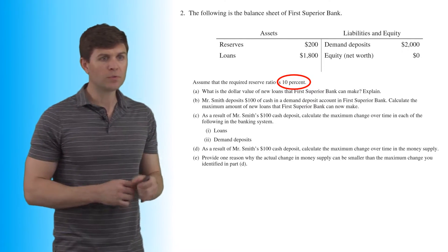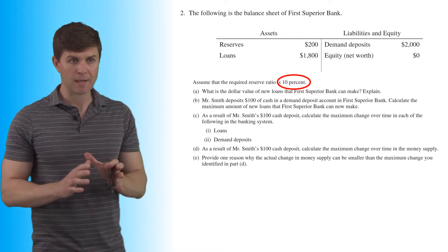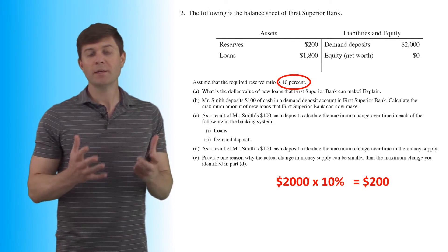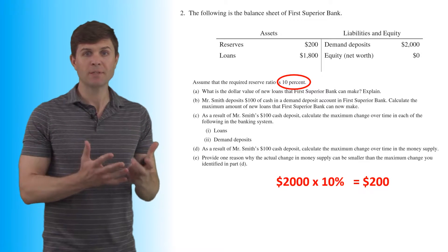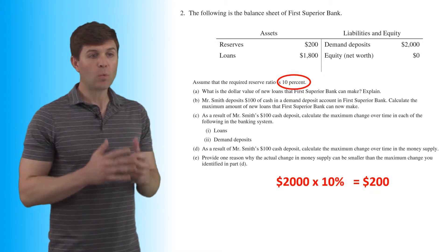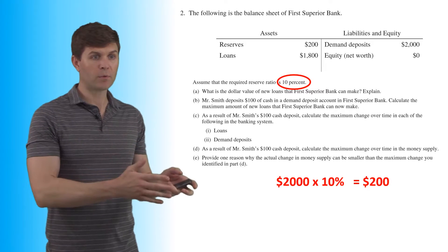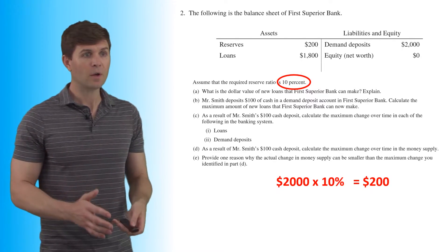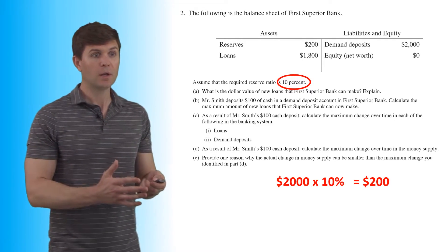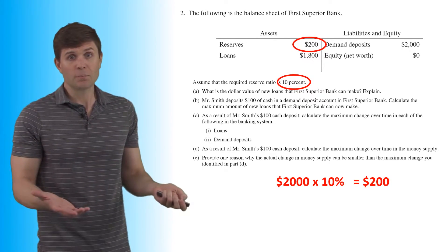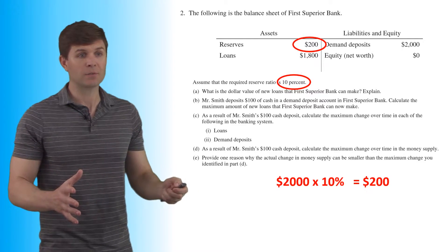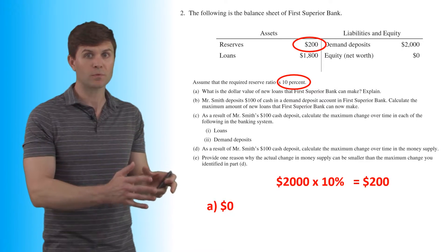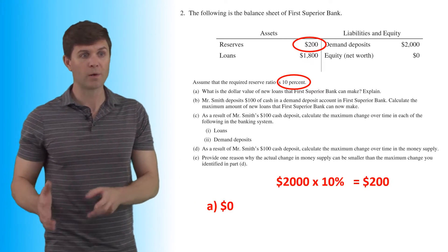Part A asks: what is the dollar value of new loans that First Superior Bank can make? We need to figure out the reserve requirement — what we have to keep in the vault. We have $2,000 in demand deposits and a 10% reserve requirement, so required reserves are $200. Our current reserves are also $200, meaning we can loan out $0 — there are no excess reserves.